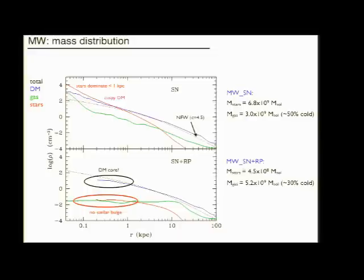There's no stellar bulge and the density is highly suppressed in the center. And we also see, comparing to an NFW profile, that the dark matter is much less cuspy in the supernovae case, whereas we seem to be forming a dark matter core in the case with radiation pressure.